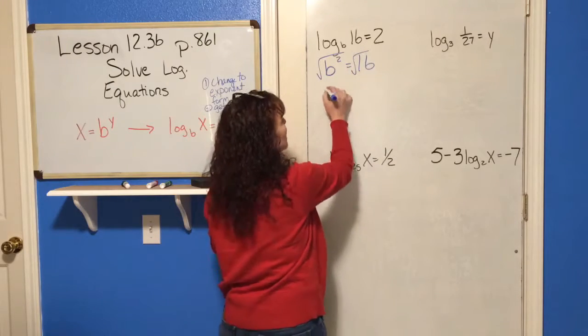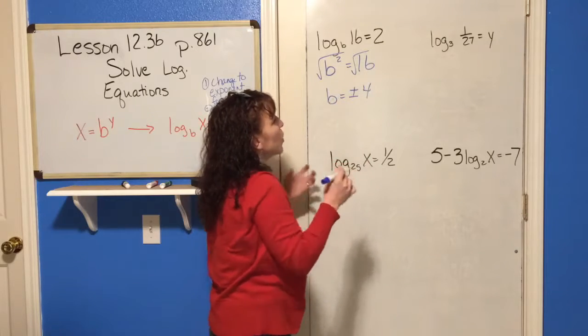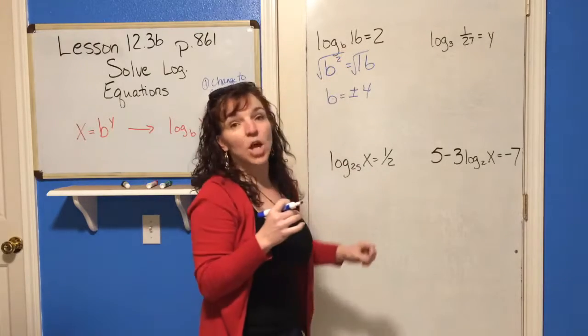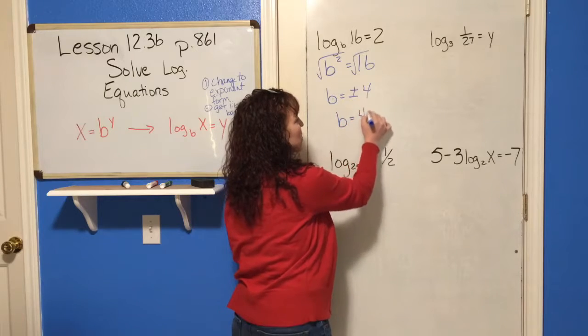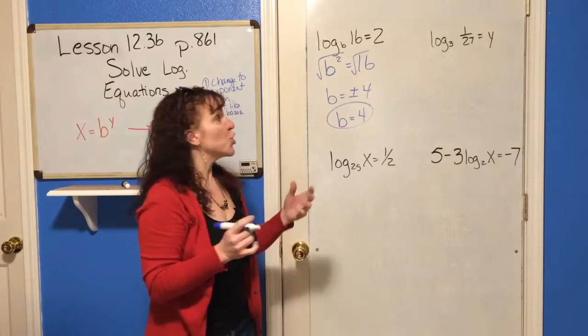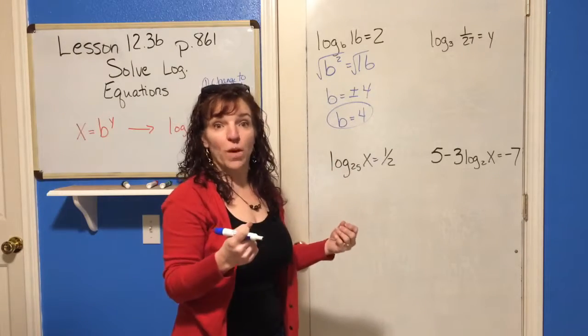So b equals plus or minus 4, now what you do need to know is that the base of a log cannot be negative, so this b must equal the positive 4. Simple enough? So once you get it into exponent form, sometimes the solution is quite simple.